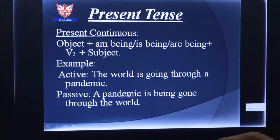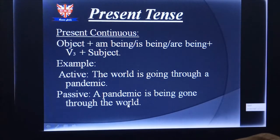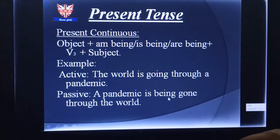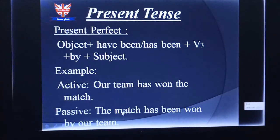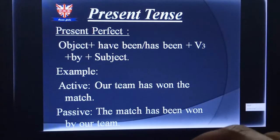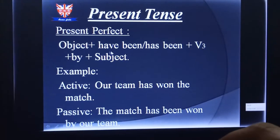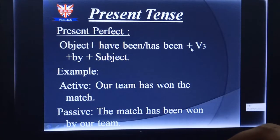So the example: 'The world is going through a pandemic' becomes in passive: 'A pandemic is being gone through by the world.' Now let's go to present perfect. The structure is: object + have been/has been + V3 + by + subject.